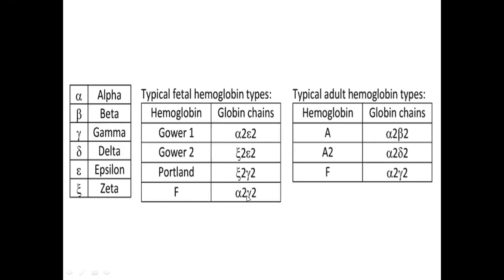Fetal hemoglobin has two chains of alpha and two chains of gamma. In adults, Hemoglobin A is the normal predominant type with two alpha and two beta chains. Hemoglobin A2 has two alpha chains and two delta chains. Fetal hemoglobin is also present in adults but in small amounts, with two alpha and two gamma chains.